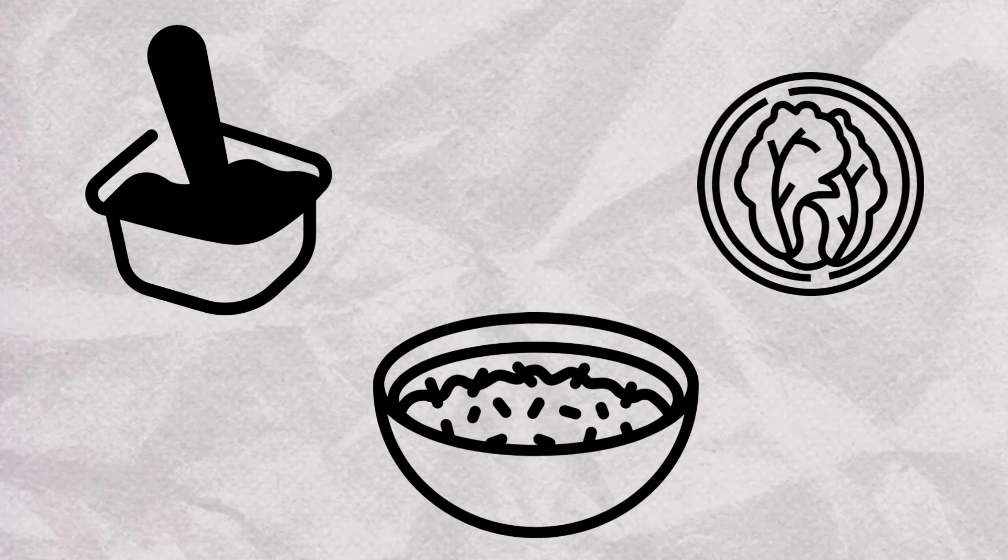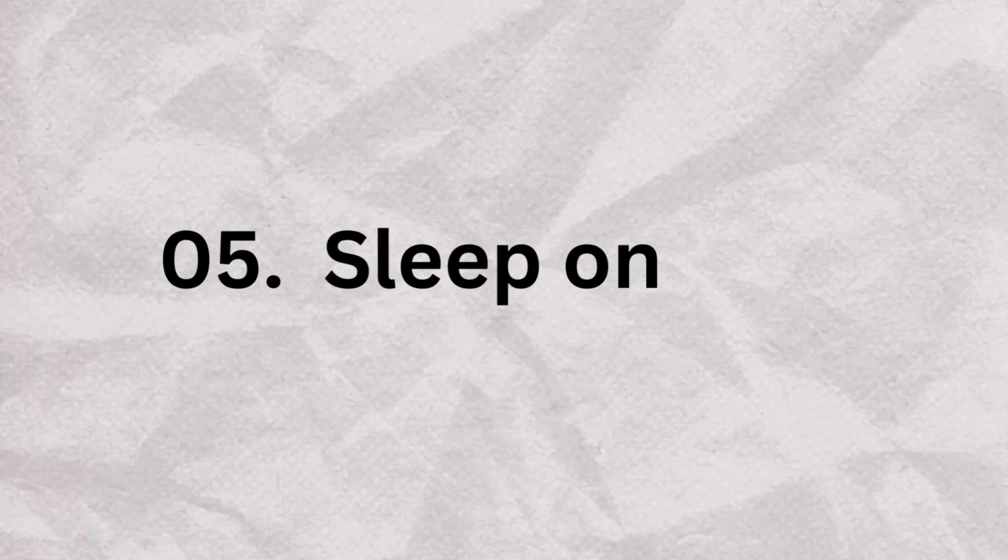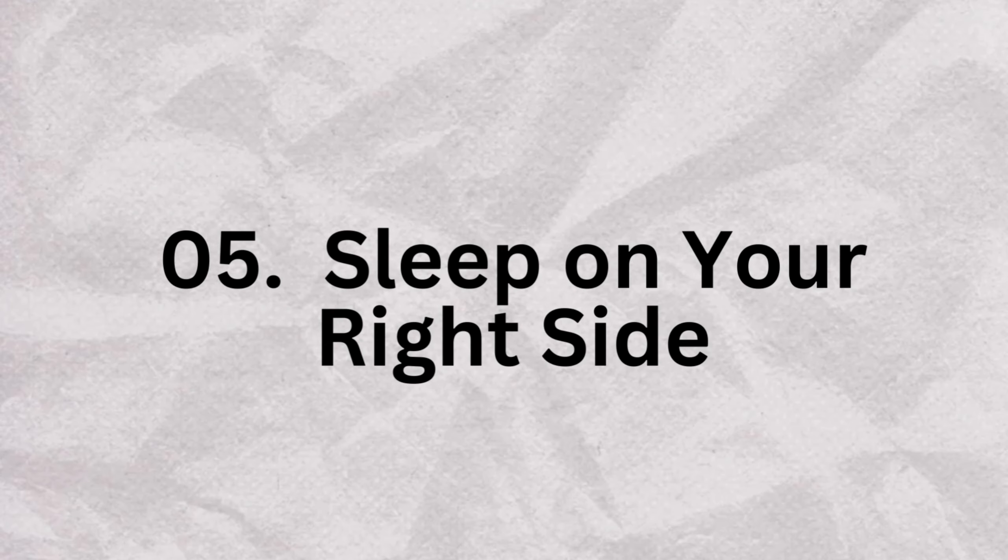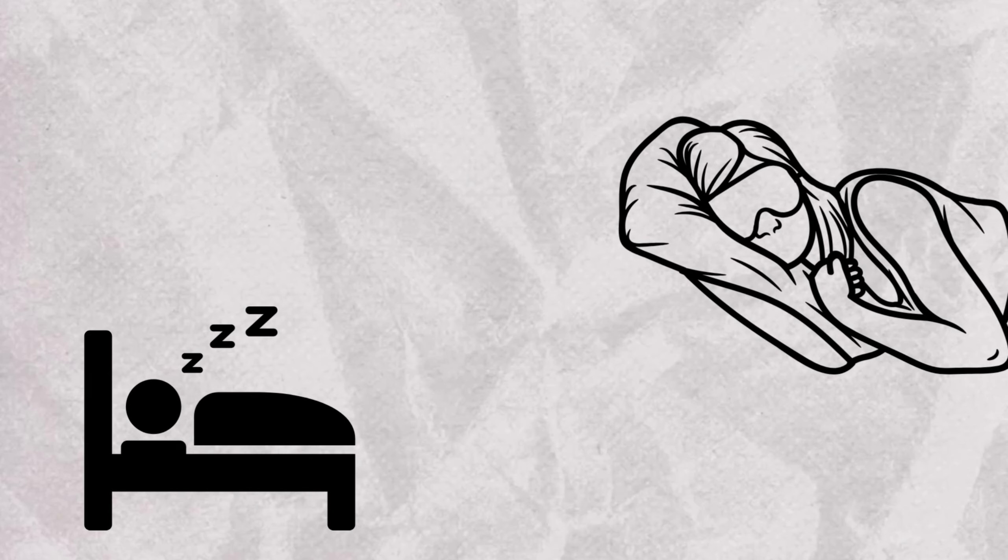Number five: Sleep on your right side. Sleeping on your right side can activate the vagus nerve since it runs down the right side of your neck. This simple adjustment to your sleep position may enhance your vagal tone.